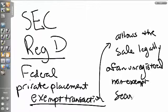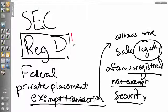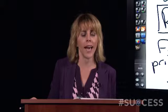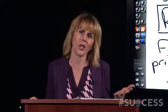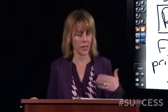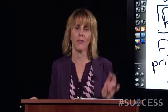Regulation D allows the legal sale of securities that under normal situations require registration — for example, a private placement of variable life insurance. It introduces new terms: SEC Rule 501, Rule 506, and a new term called Accredited Investors.